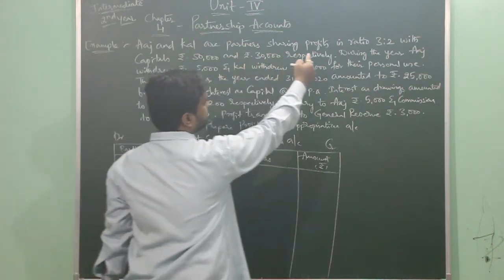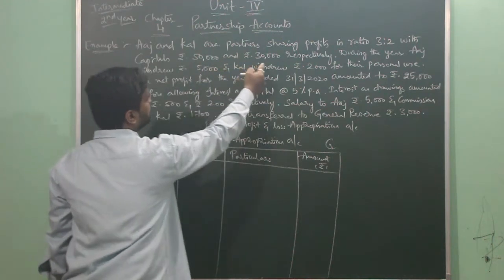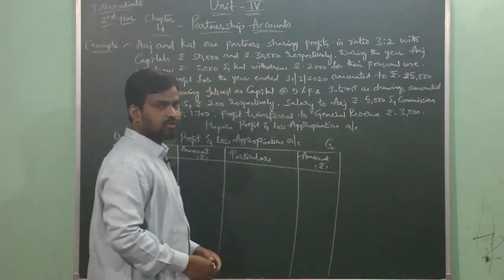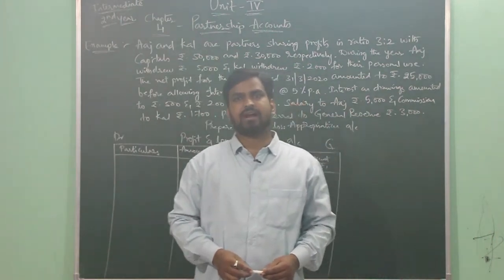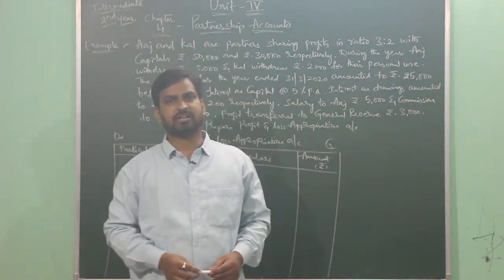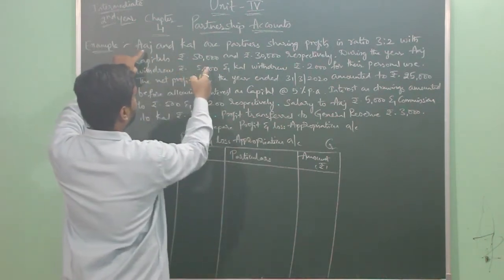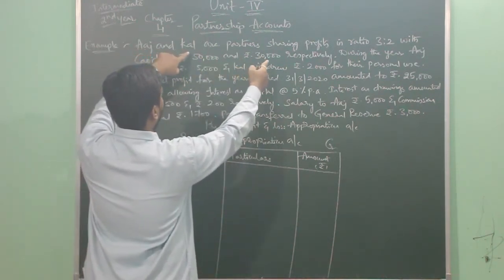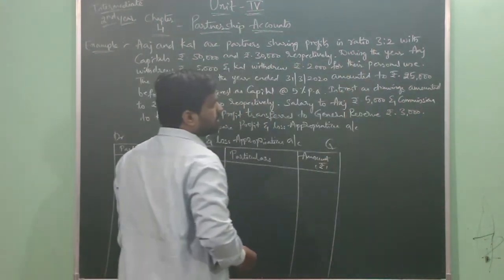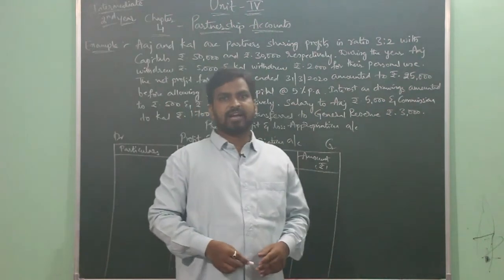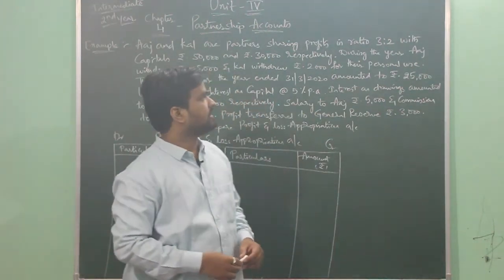Here is the question: A and B are partners sharing profits in ratio 3:2 with capitals of rupees 50,000 and rupees 30,000 respectively. So the partners are Mr. Aaj and Mr. Kull, and their capital investments are 50,000 and 30,000 respectively. It means Aaj has invested rupees 50,000 as capital and Kull has invested rupees 30,000 as his capital, and their profit sharing ratios are given as 3:2. Whenever profits are distributed, it will be in the ratio 3:2 among Aaj and Kull.